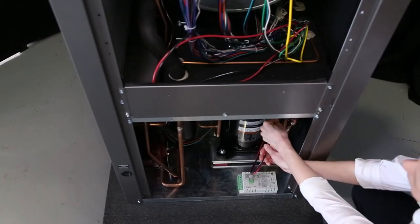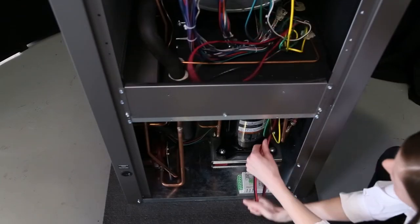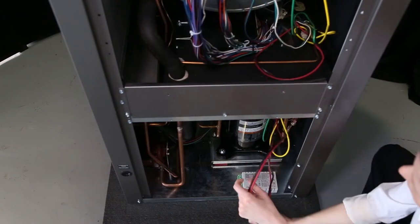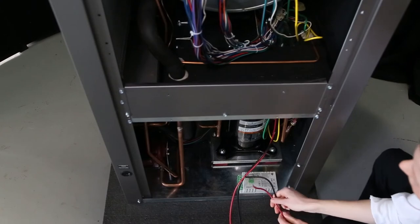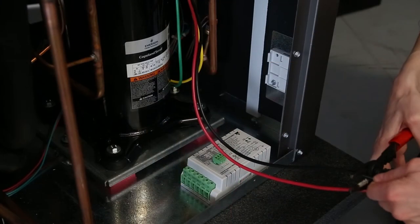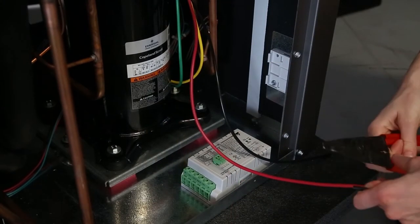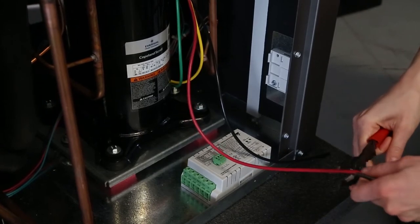Take the black and red 10 gauge wires, the ones that were disconnected from the contactor, and route them through the wiring access hole at the bottom of the blower compartment into the compressor section. Cut off any excess wire length, remembering to leave enough slack in order to mount it to the metal bracket.